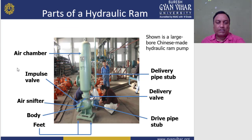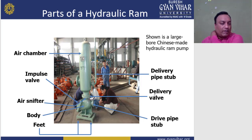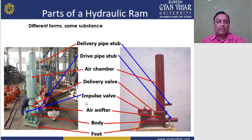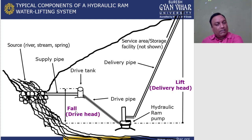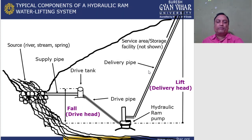The parts of the hydraulic ram are: air chamber, impulse valve, air sniffer, body, feet, and drive pipe. This is shown in a large bore Chinese-made hydraulic ram pump. The typical components of the hydraulic ram system include: source river stream, supply pipe, drive tank, fall drive head, and one hydraulic ram connected at the bottom which lifts the water upward.